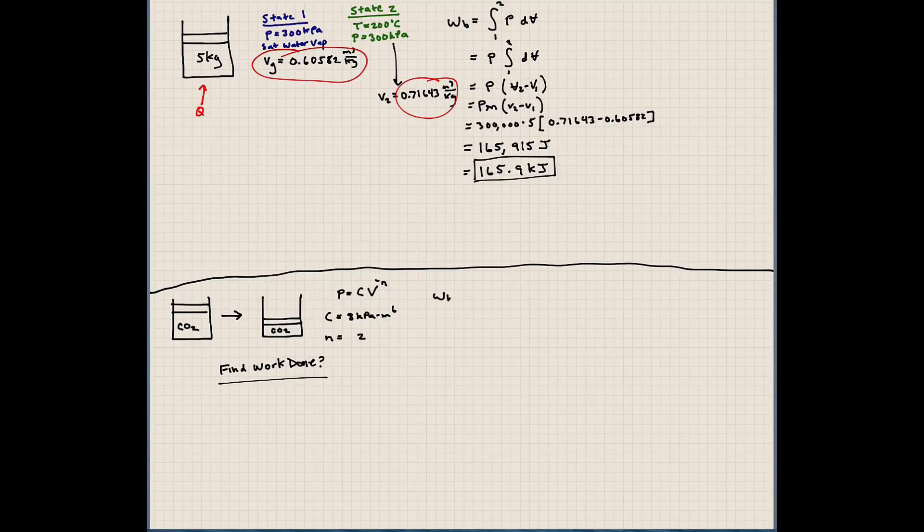The question here is to find the work done. Well to do that, we're going to use our same boundary work equation, the integration of P dV. Except now, P dV is a little bit different. We have a relationship for P. So P here is going to be c times v to the minus n dV. Or we can write this as c over v to the minus 2 dV. Either way, we're all doing the same thing here. And these are all integrated between points 1 and 2.